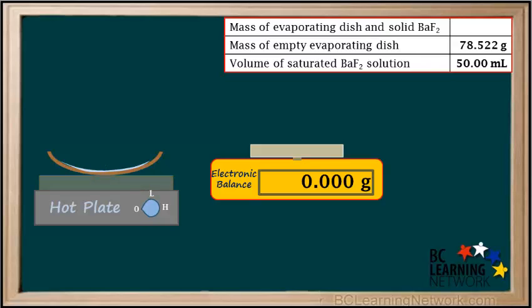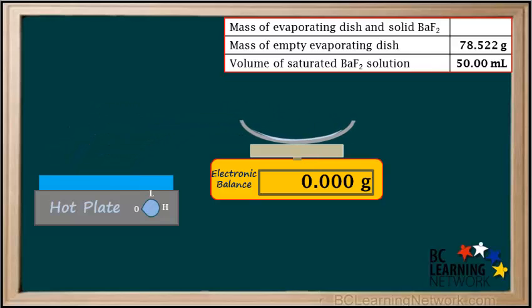We turn the hot plate off and let the dish cool down. After it's cooled, we place the evaporating dish with the solid residue back on the electronic balance. The reading is 78.553 grams — this is the total mass of the evaporating dish and the solid BaF₂ that was originally dissolved in the 50 milliliter sample of the saturated solution. We record that in the data table.